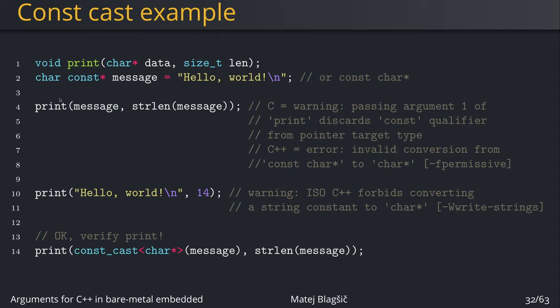Also, if we want to print straight a string literal like hello world by calling this function, we get a warning both in C and C++ which says that ISO C++ forbids converting from string constants to char pointer.